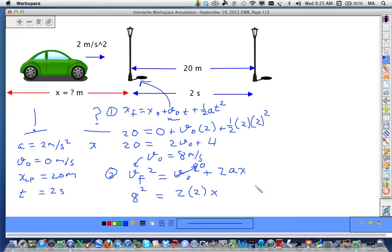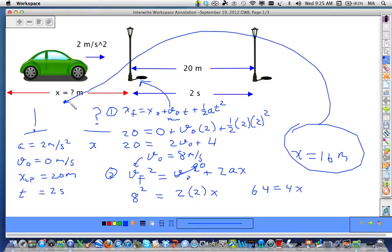We get sixty-four is equal to four x, and lo and behold, x is equal to sixteen meters. So there's the answer to the question: how far did the car start from rest, accelerating at two meters per second squared, to the first lamppost? It is sixteen meters.